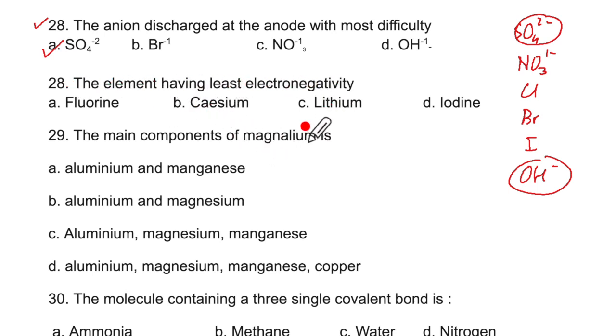The element having least electronegativity. Least electronegativity is going to be more metallic in nature. Across the period electronegativity increases and down the group electronegativity decreases. Lithium is here and cesium is here. So when cesium is here, it will have less electronegativity. So it will be cesium.